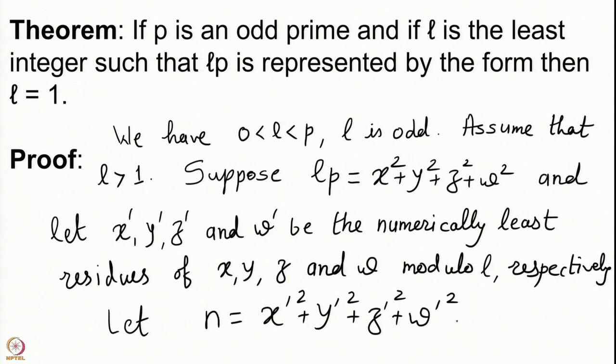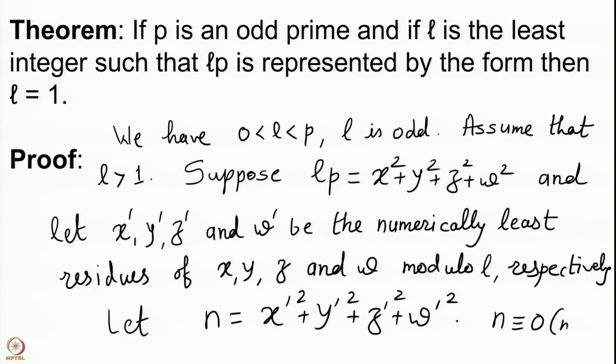Now x ≡ x′, y ≡ y′, z ≡ z′, and w ≡ w′ modulo l. So as far as the congruence modulo l is concerned, x′ represents x, y′ represents y, z′ represents z, w′ represents w — their squares are also congruent, and the sums of the squares are also congruent. So modulo l, n is congruent to lp, and therefore n ≡ 0 mod l.